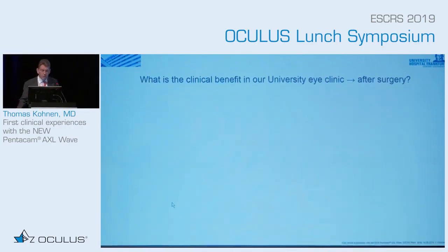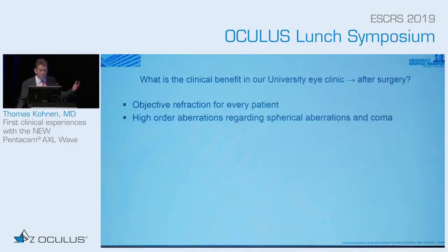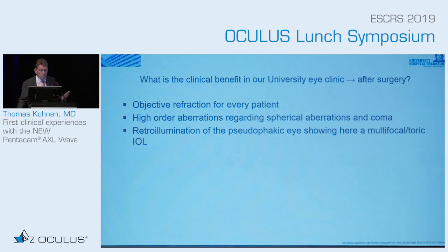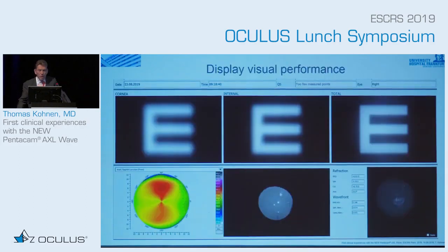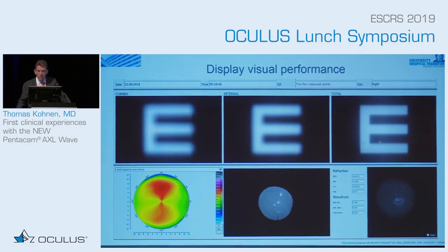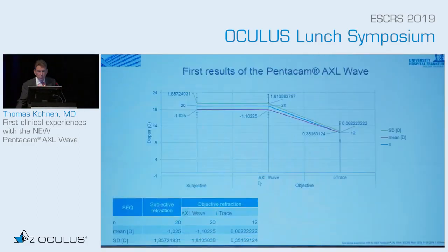After surgery, what can we get? The same measurements: objective refraction, higher-order aberrations, retroillumination, and wavefront aberrations. Here is a picture after surgery showing the corneal measurements, internal measurements, and total measurements, with this outcome as you can see.